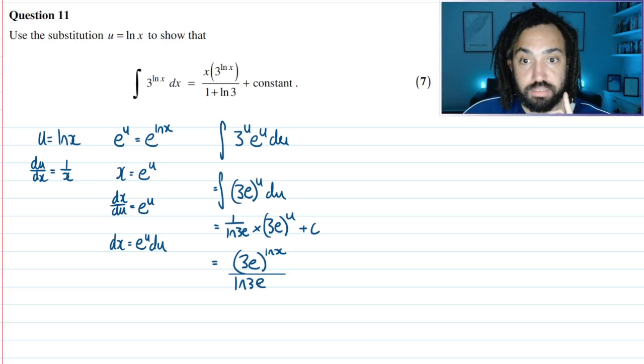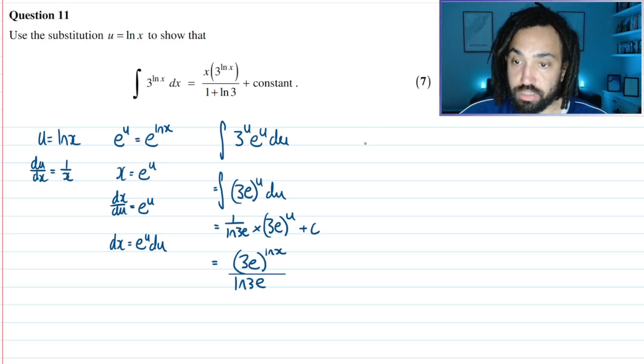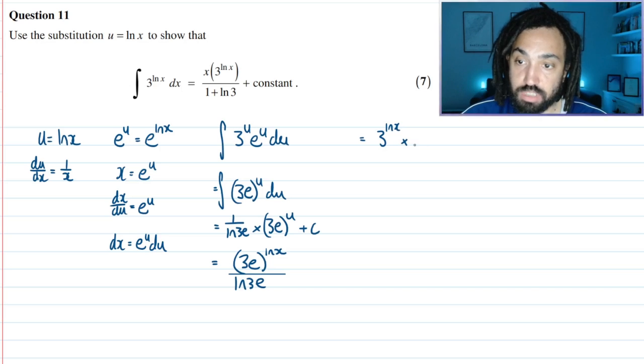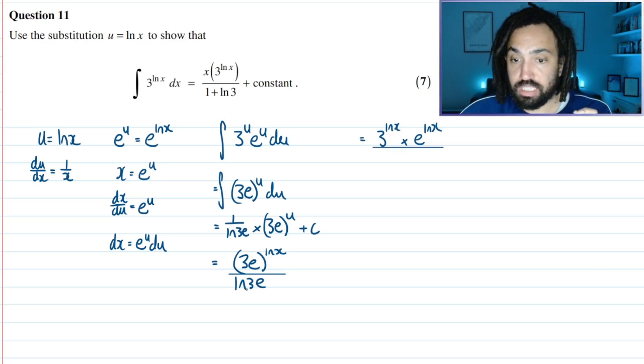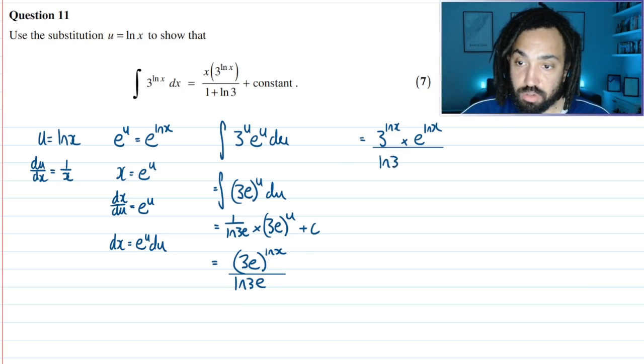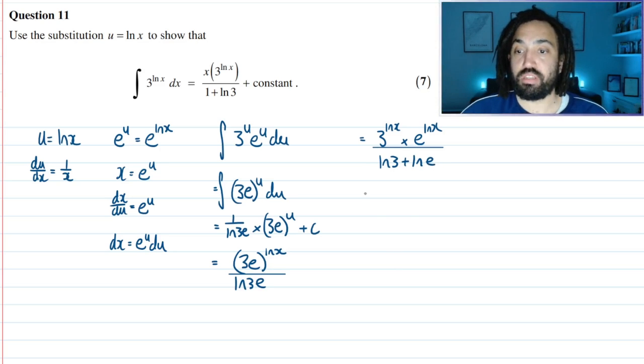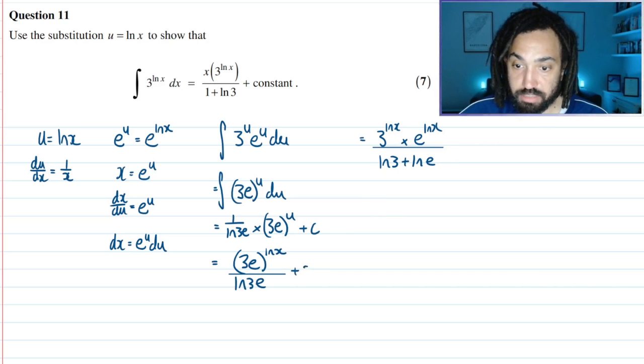What to do next? I can see here we've got (3e)^(ln x). We can use some of our power rules. We can write the top as 3^(ln x) multiplied by e^(ln x). And on the bottom, ln of two things multiplied together is the same as writing them as the logarithm of them added together, so ln 3 plus ln e.